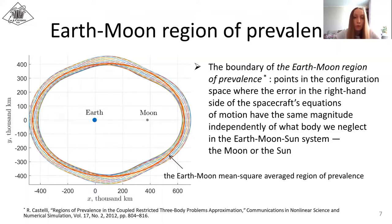In the planar BR4BP model, the Earth-Moon region of prevalence is time-dependent, and for our purposes we introduced the mean square average region of prevalence. And following Castelli's idea, we obtained a whole WSB trajectory by smoothly patching the arriving, departing, and exterior legs on the boundary of the averaged region of prevalence.